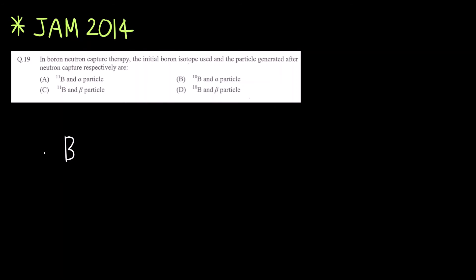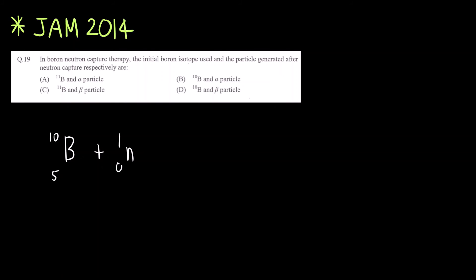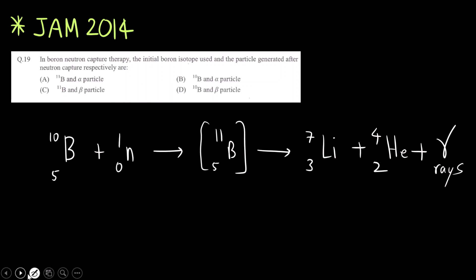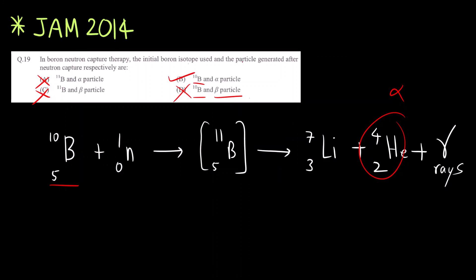We saw the reaction just now. The cancer cell absorbs the isotope of boron — atomic number 5, mass 10 — which is B-10. Then you irradiate it with a neutron, and an intermediate unstable isotope of boron is formed. This undergoes disintegration to form lithium, an alpha particle (atomic number 2, mass number 4), and gamma radiation. So the initial isotope is B-10 — B-11 is incorrect. The particle generated is an alpha particle — beta particle is incorrect. The correct answer is option B.